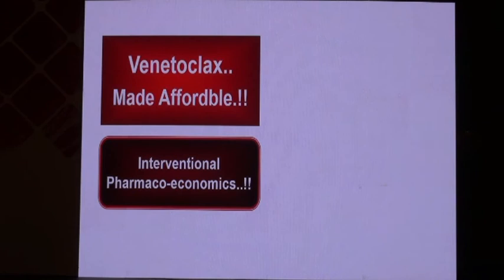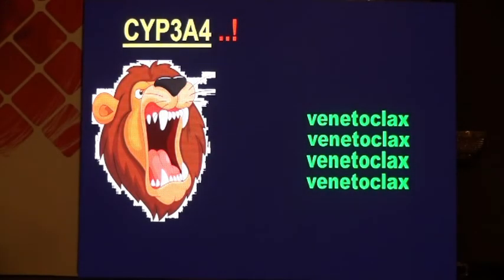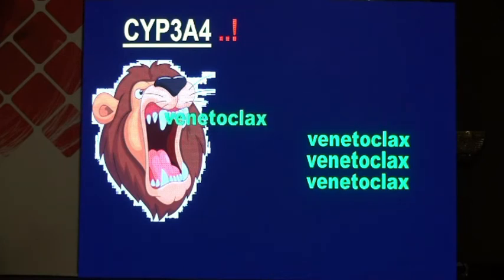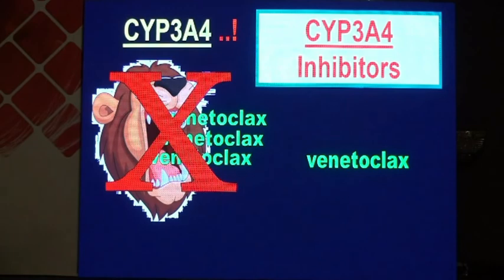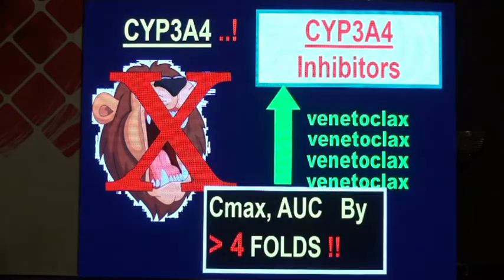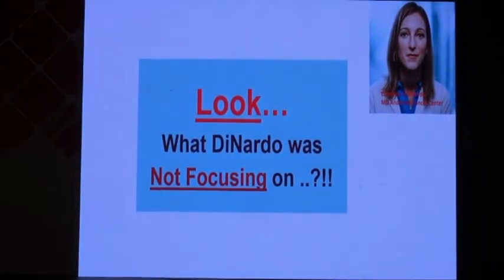Interventional pharmacoeconomics — a rather new term. Can you use drug interactions in an economically beneficial way? Venetoclax is catabolized and destroyed by CYP3A4, which accounts for almost 80% of the clearance of this drug. If you block this enzyme with a CYP3A4 inhibitor — which is by the way forbidden by the company — you can increase the Cmax and AUC by almost four-fold, meaning you can decrease the dose by four times.